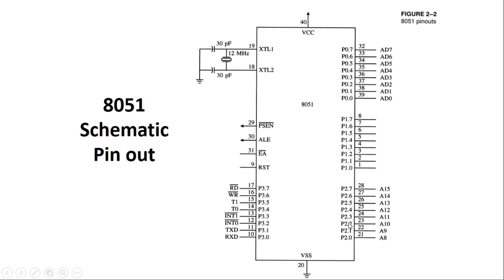Port 2 is used for interfacing external peripherals as well as serving as the higher-order address bus for interfacing external memory. Port 3 — pins P3.0 to P3.7 — also has alternate functions and can be used for interfacing external peripherals.